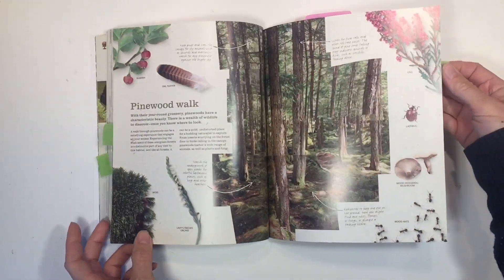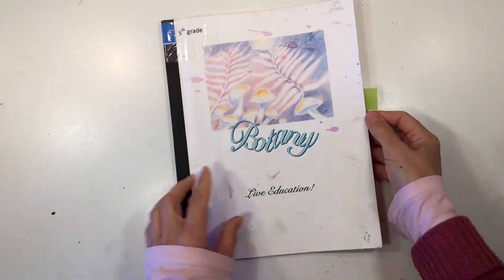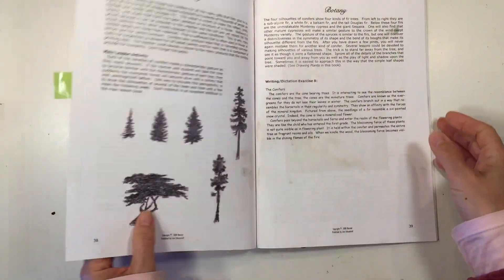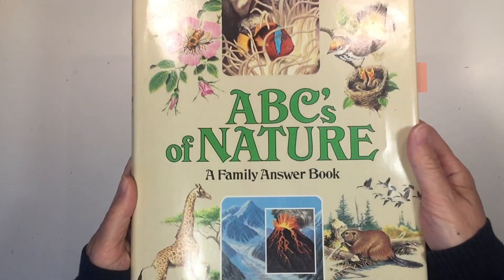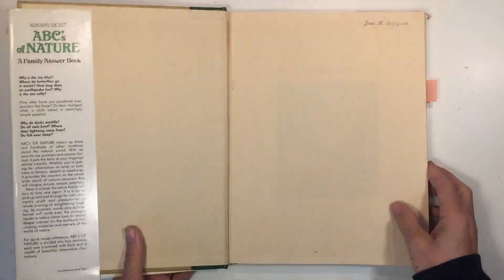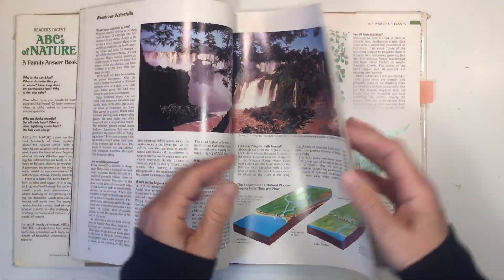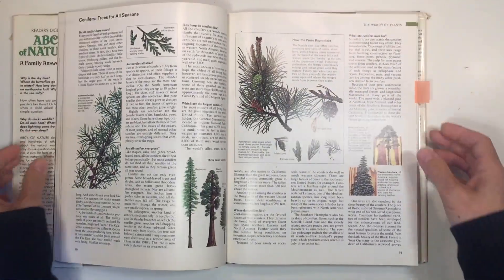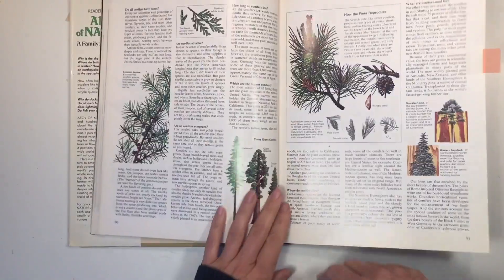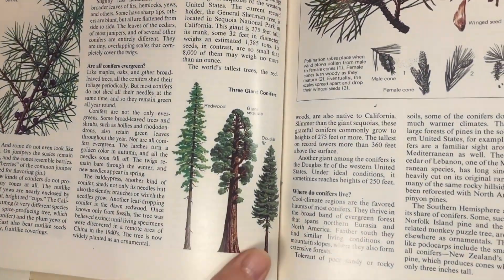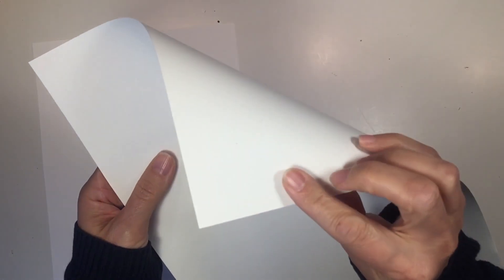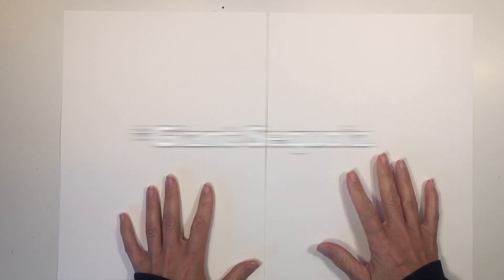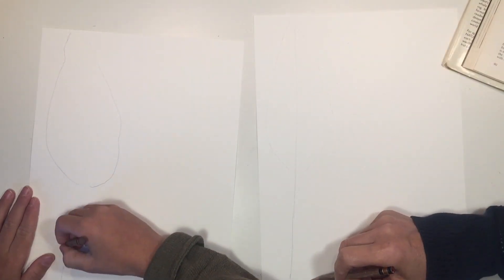We're going to continue this lesson with another activity. This time, we are going to be observing the shape of different conifers. To help us out, we're going to go back to our ABCs of Nature book by Reader's Digest, published in 1984. Today we're going to use this image at the bottom for inspiration. Two of those trees happen to be native to California. We're going to be drawing a redwood tree, a spruce tree, and then a Douglas fir.